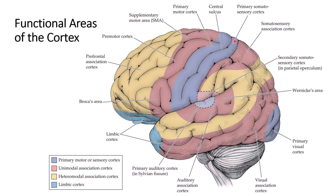In the parietal lobe you can see the primary somatosensory area — the postcentral gyrus — and the somatosensory association cortex. In the temporal lobe you can see the primary auditory area and the auditory association area. You also have the primary visual cortex and visual association area. The Wernicke area is located between the temporal lobe, occipital lobe, and parietal lobe — so it's in that junction area, not totally on the temporal lobe.